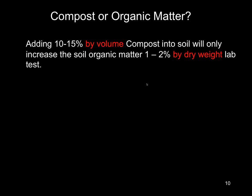When we add compost to soil — if we add an amount equivalent to 10% to 15% by volume — we'll only increase the soil organic matter by about 1% to 2% dry weight in lab tests. This is a very important distinction and why, in our specifications, we should separate the words compost and organic matter. Never call compost organic matter and never refer to organic matter when you're really talking about compost.